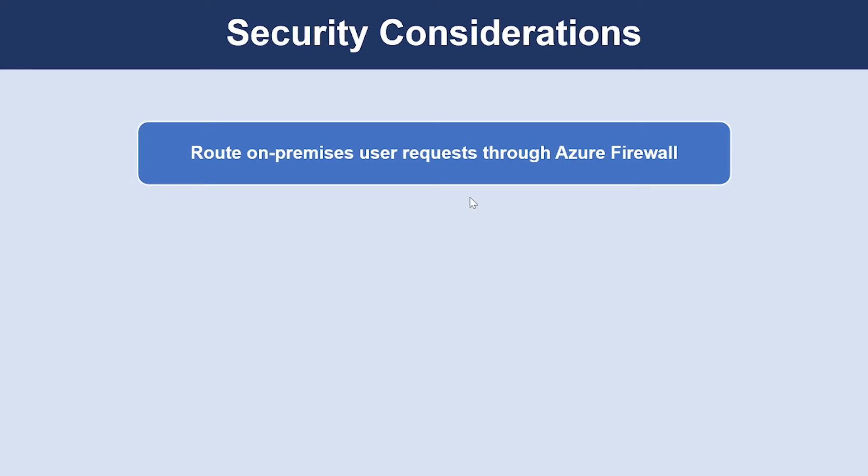Now let's look into the security considerations. The first consideration is routing all on-premises user requests through Azure Firewall. The user-defined route in the gateway subnet blocks all user requests other than those received from on-premises. Requests are passed to the firewall and on to the application if allowed by the firewall rules. Make sure additional routes don't bypass the firewall or block administrative traffic intended for the management subnet.